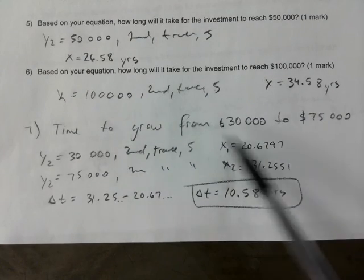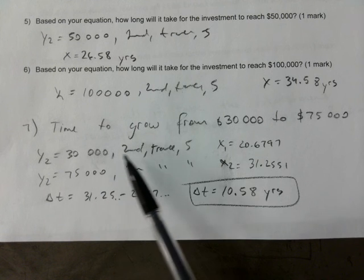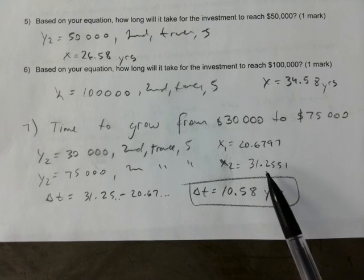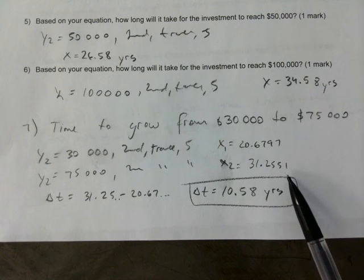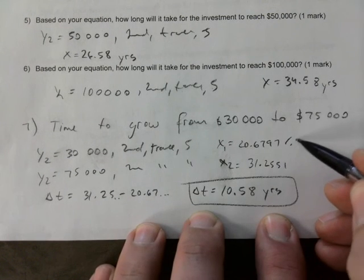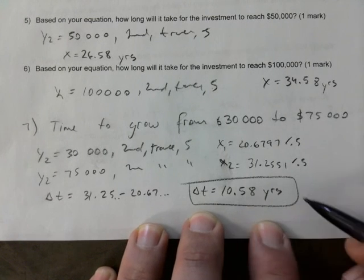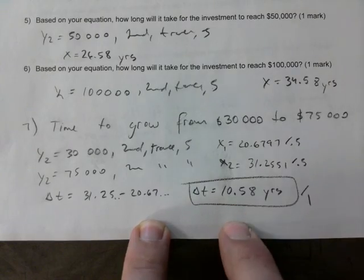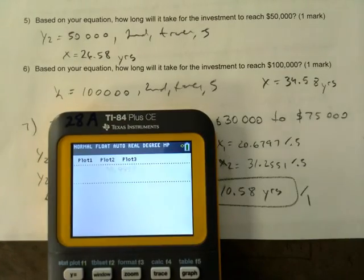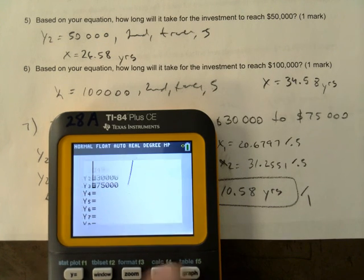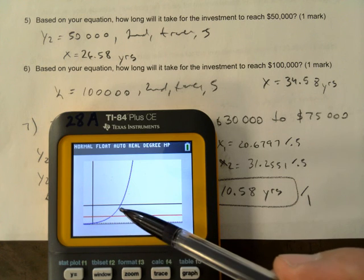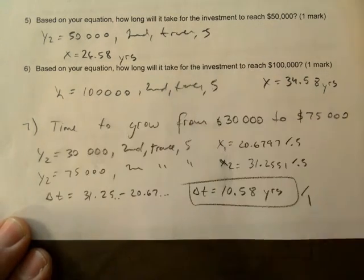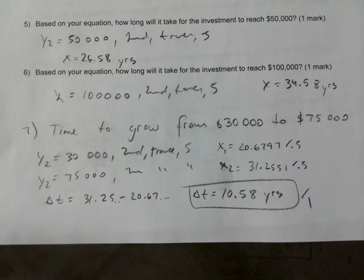And so here's the one I added. How long, the time to grow from 30 to 75. You figure out how long would it take to get to $30,000? That's the time, 20 years. How long to get to $75,000? 31. And notice I'm using four decimals. I need to subtract. So you would get half a mark for each one of these points that you found. And then a full mark for actually subtracting and getting that delta time. And you're finding both of the times. And just to give you a visual, you would graph both of these lines. So it takes about 10.58 years for that to happen. That's two marks for that question.